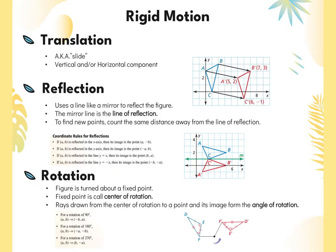There are three kinds of rigid transformations we're going to talk about. The first is translation. A translation is literally like a slide — you're sliding it to the right, to the left, up, down, or a combination of the two.